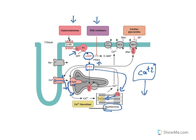Phosphodiesterase 3 is an enzyme that metabolizes cyclic AMP to 5-AMP. If you inhibit that enzyme, you are increasing the levels of cyclic AMP. So both classes — catecholamines and PDE3 inhibitors — act through cyclic AMP to increase calcium levels.